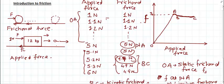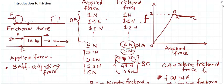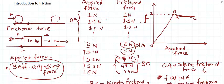One last point: in the region OA we saw that as the applied force increased the frictional force also increased. Therefore friction is known as a self-adjusting force — it adjusts itself as the applied force increases in the static frictional region. Later on it becomes constant, but in the static frictional region friction is a self-adjusting force. With this I have given you a brief introduction to friction, and in the next video we will go into some deeper concepts associated with friction.